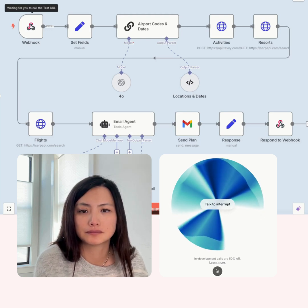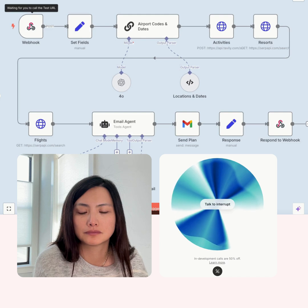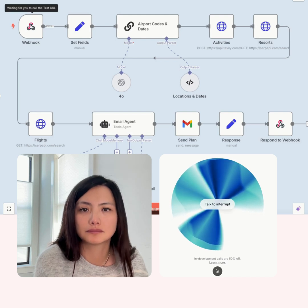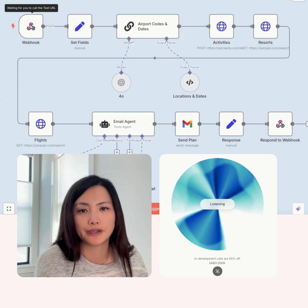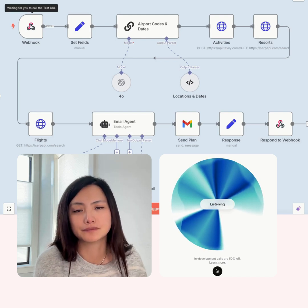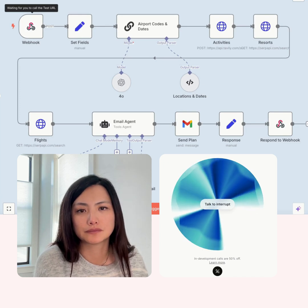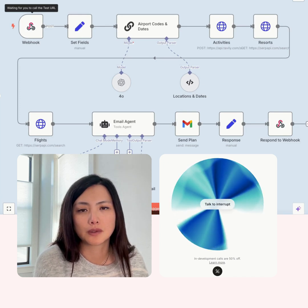The agent confirms: I have your departure date as April 10th and your return date as April 15th. How many people will be traveling? I answer: Three. The agent then asks: Are there any activities you'd like to do while you're in Los Angeles?